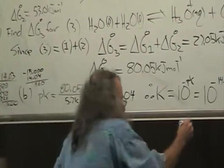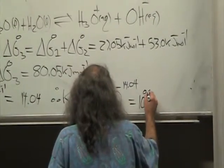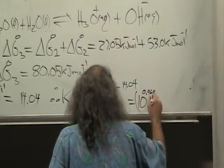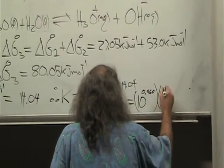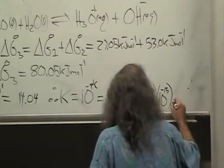So that would be equal to 10 to the 0.960 times 10 to the minus 15 equals, okay,